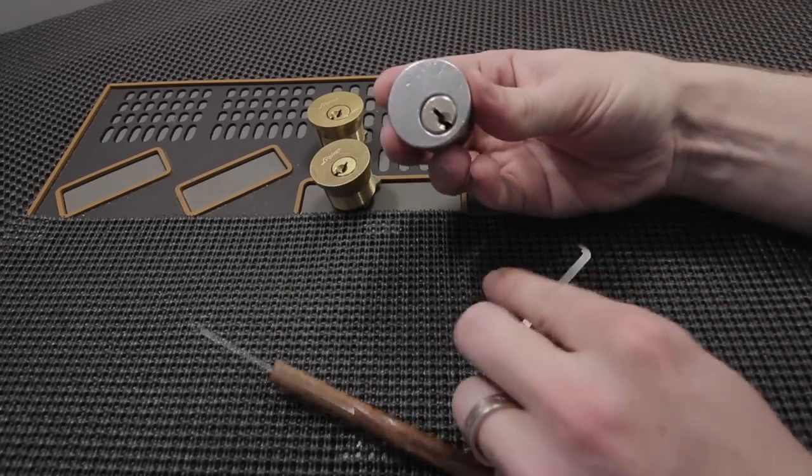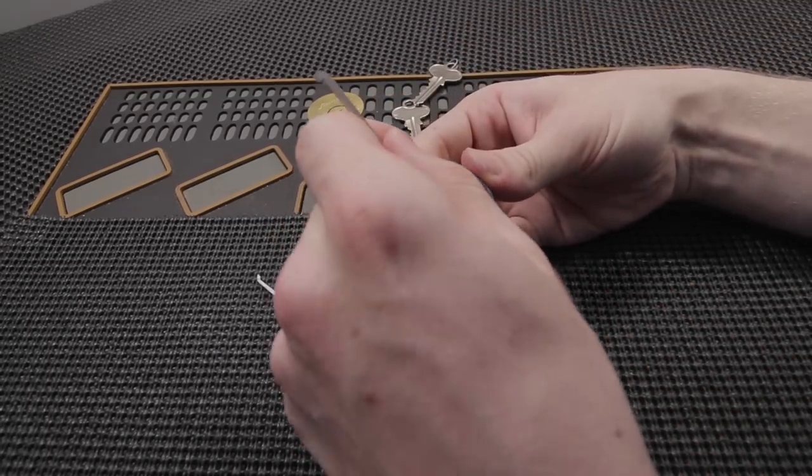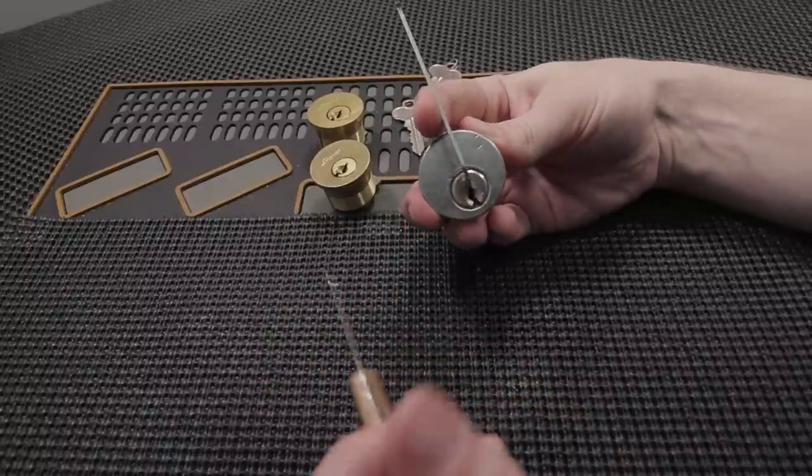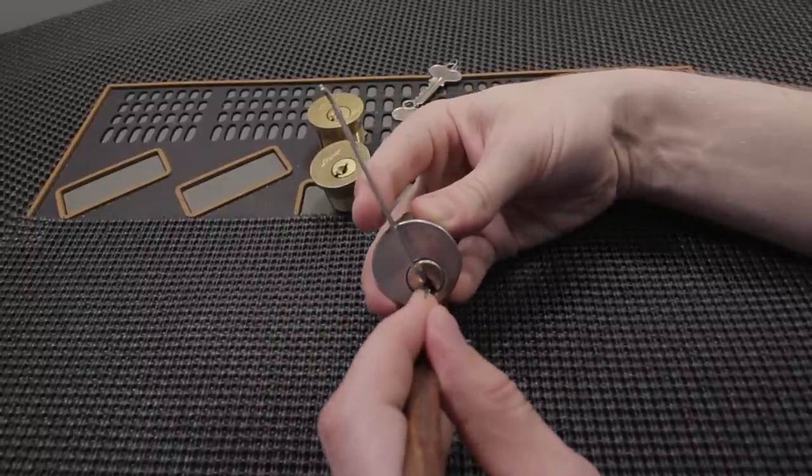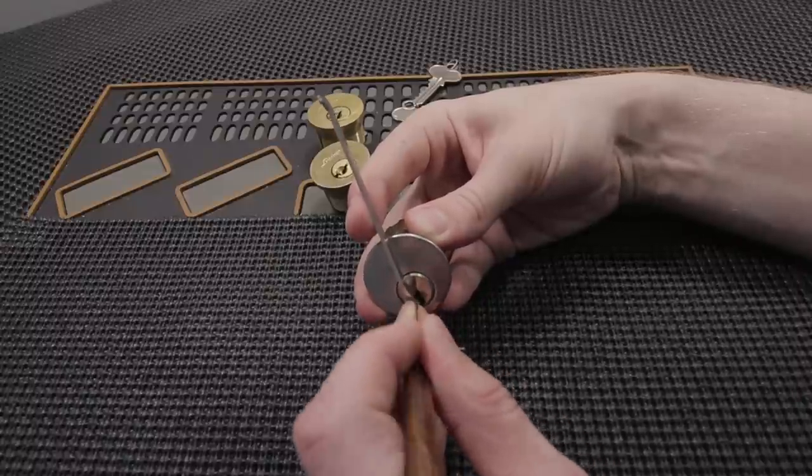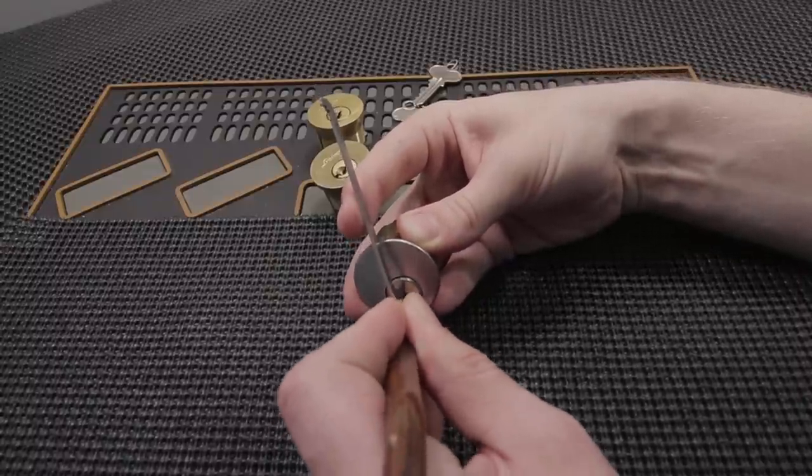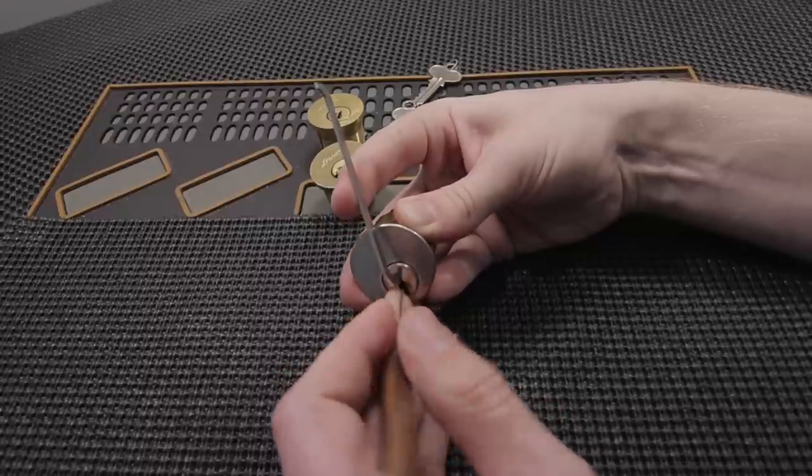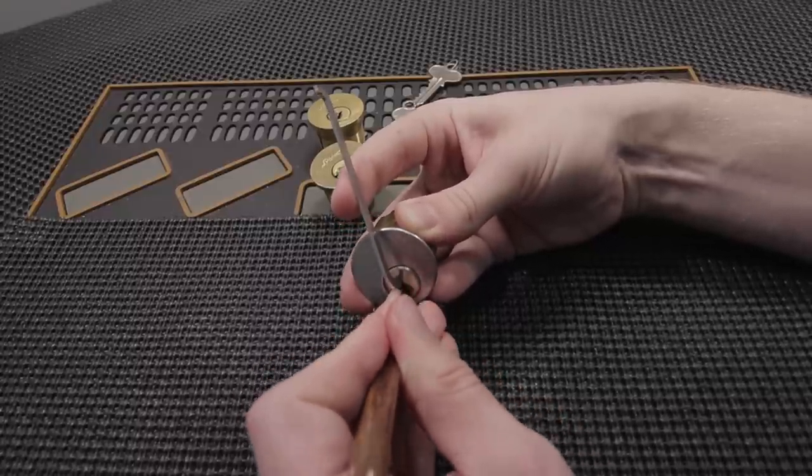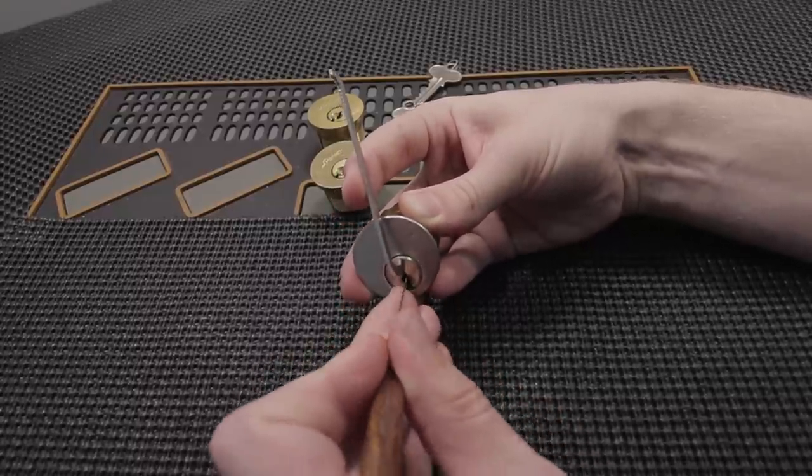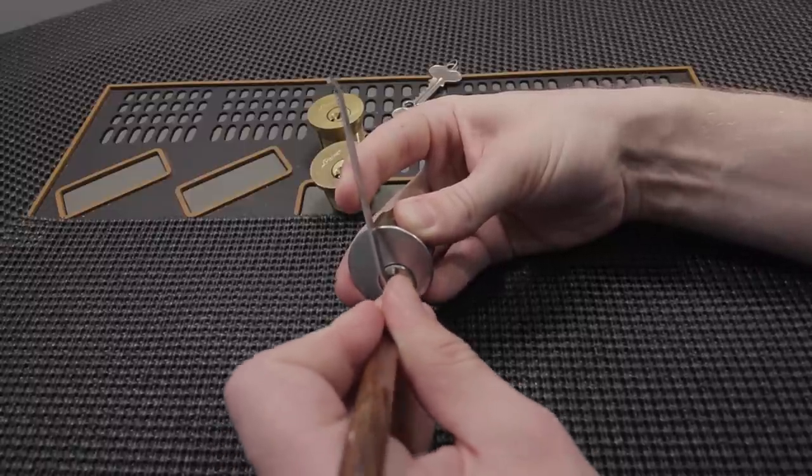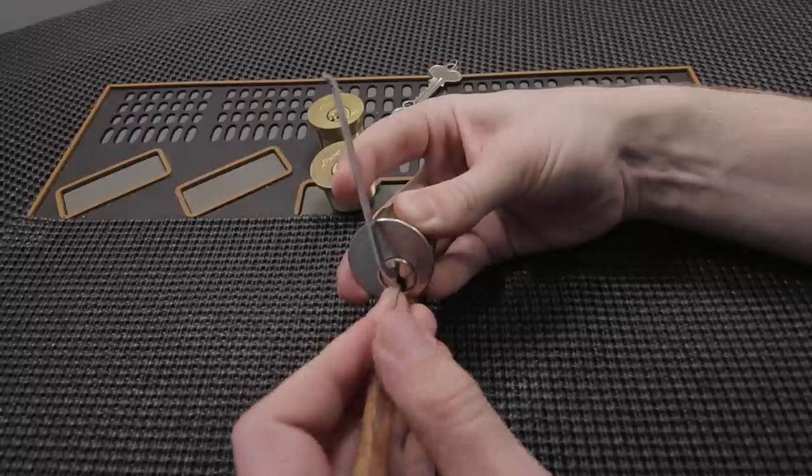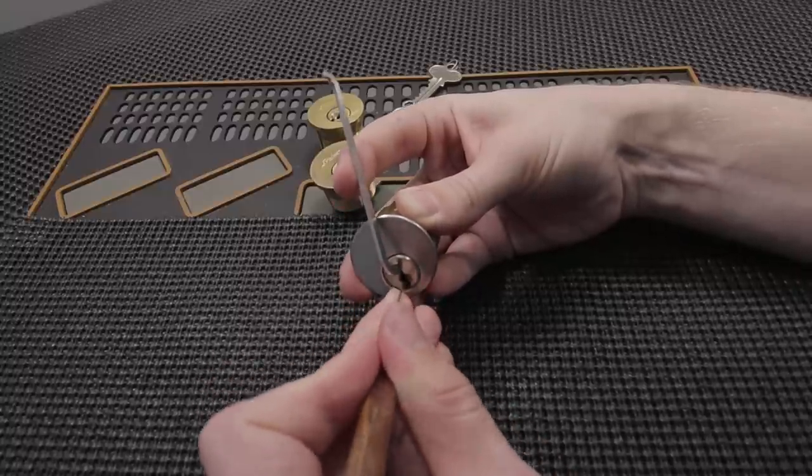We got a regular Schlage lock here, mortise cylinder, with some security pins. The Schlage keyway is a little bit more difficult than the Kwikset, so you got to kind of pick at an angle, but this pick fits in very nicely. One, two, three, four, five.